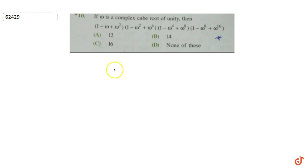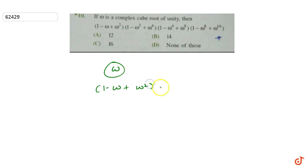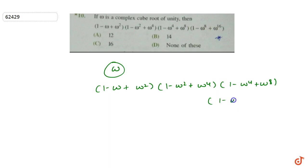In this question, we are given that omega is a complex cube root of unity. We have to find the value of (1 minus omega plus omega squared) into (1 minus omega squared plus omega to the power 4) into (1 minus omega to the power 4 plus omega to the power 8) into (1 minus omega to the power 8 plus omega to the power 16).